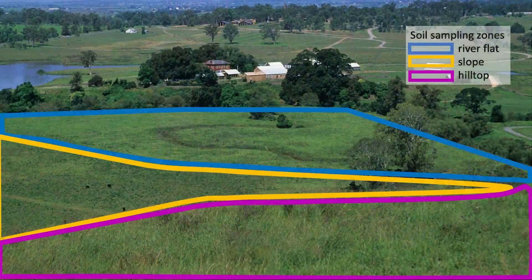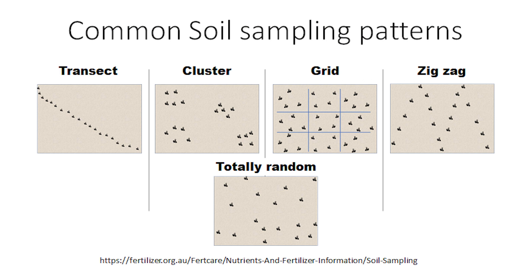For this approach to be useful, you also need to fertilize and manage these different soil types separately. It is recommended that you collect your subsamples in a predefined pattern across the paddock or zone. This ensures your final sample is representative of the whole area. Sampling patterns include a transect, cluster, uniform grid, zigzag or randomized pattern. You can discover the pros and cons of each in the FertCare soil sampling guide at the link provided.